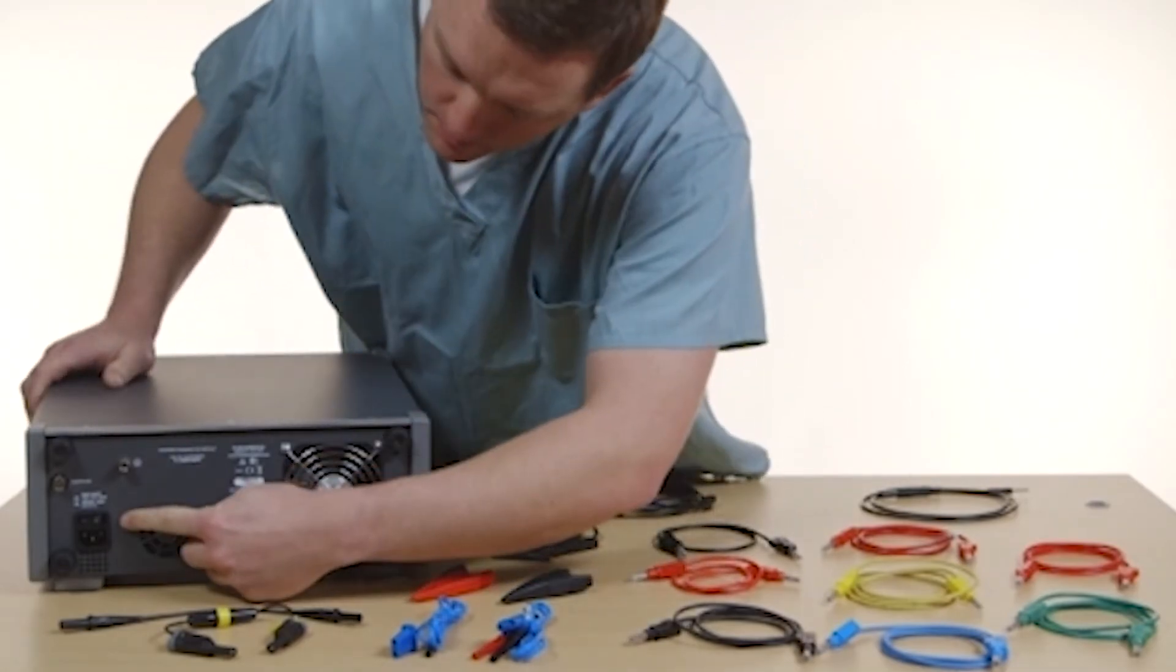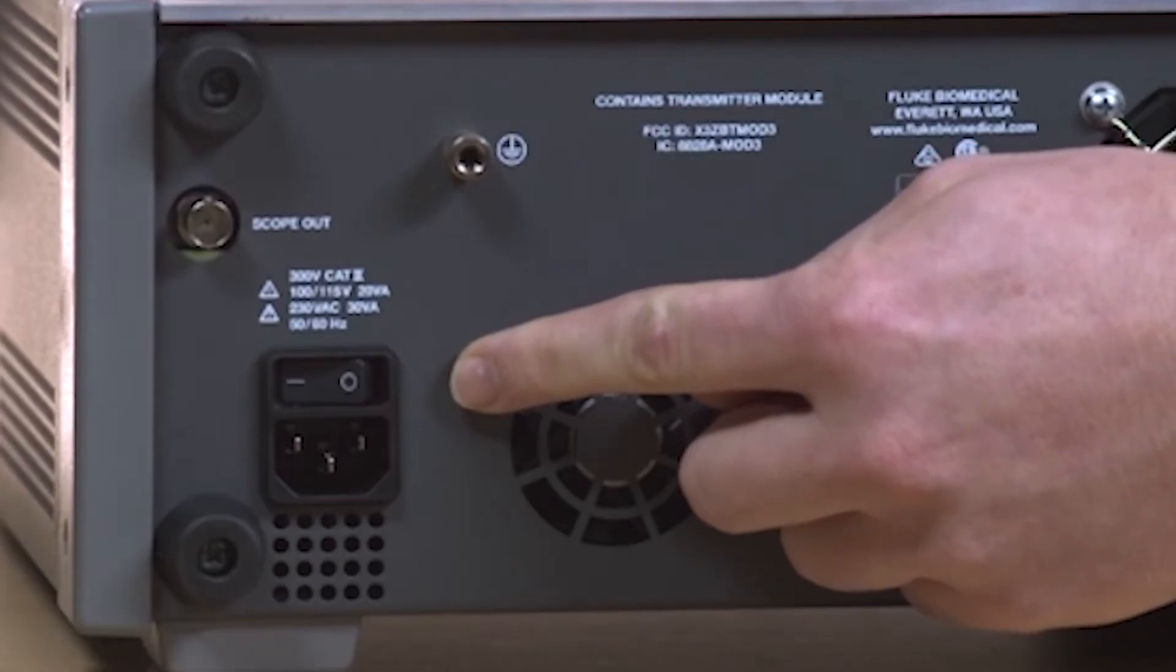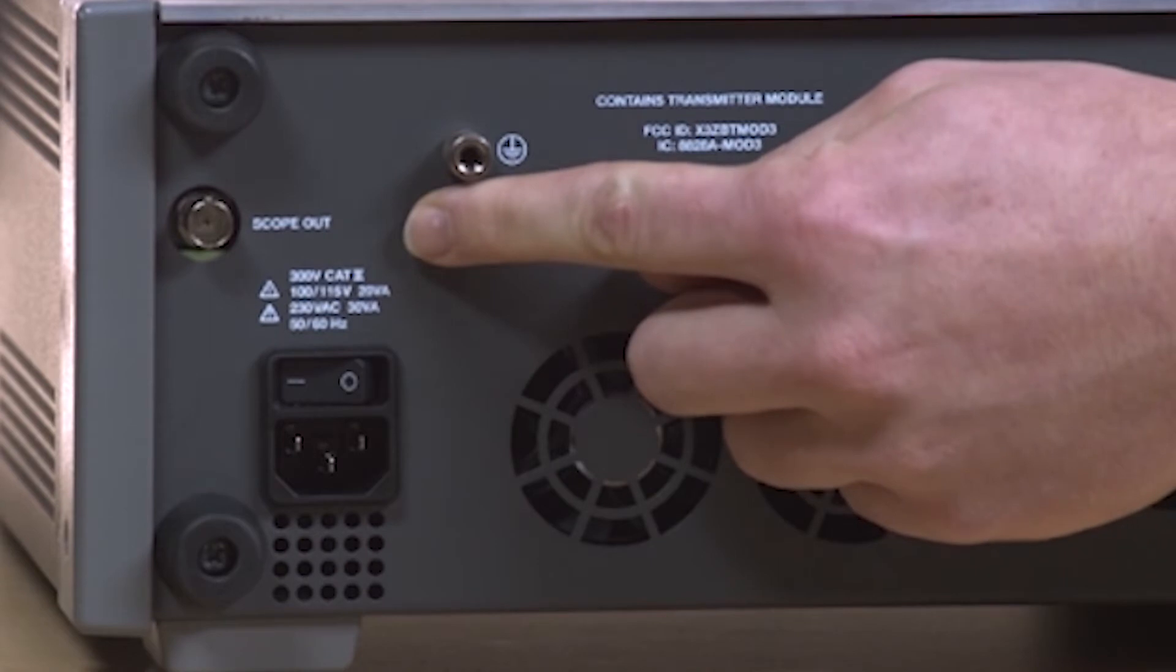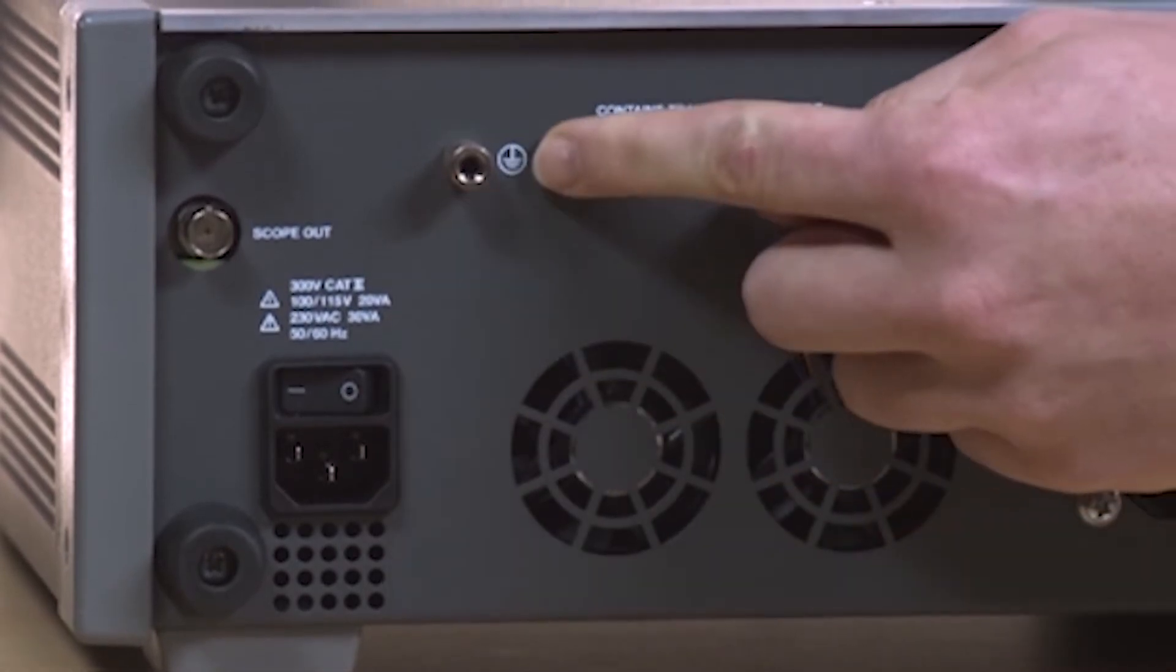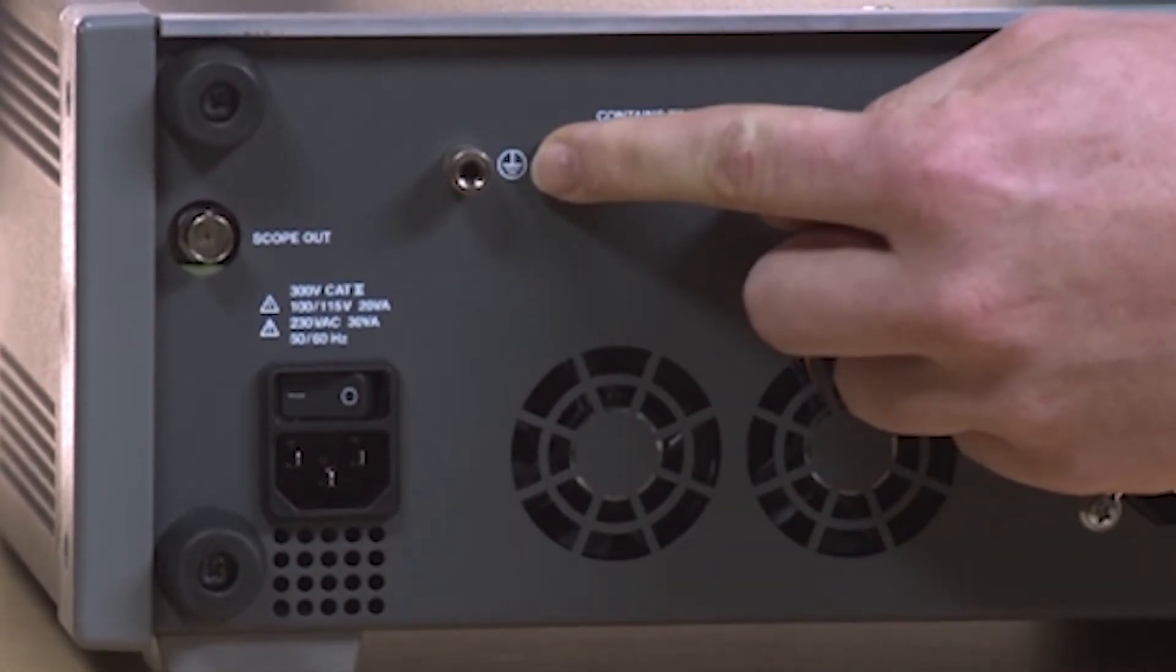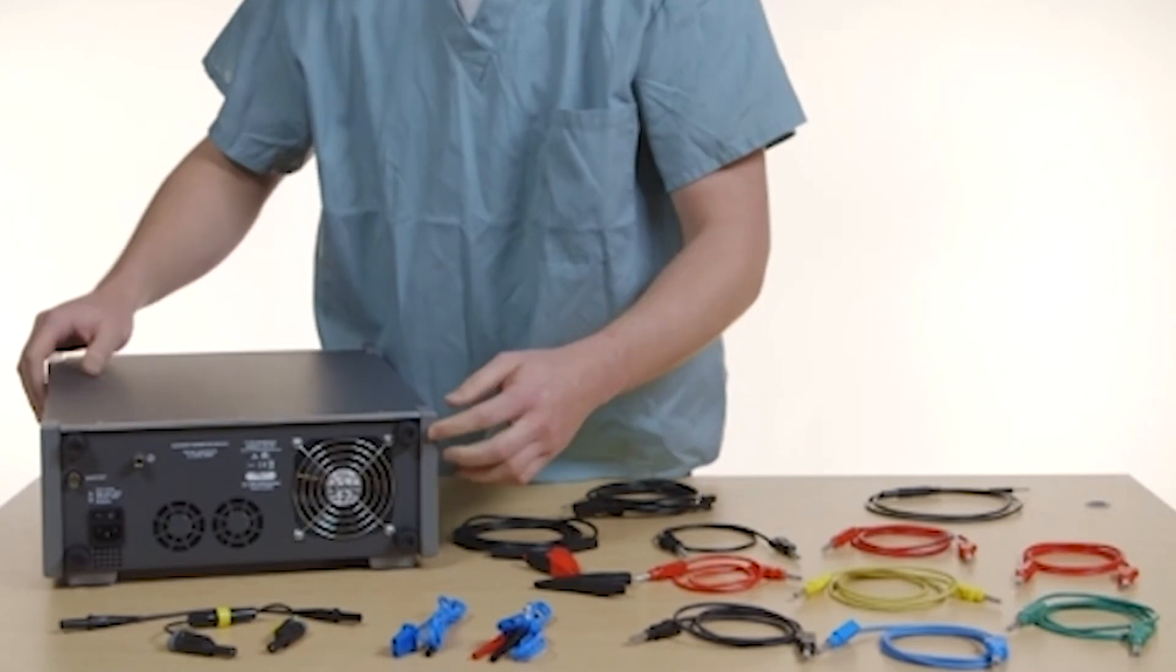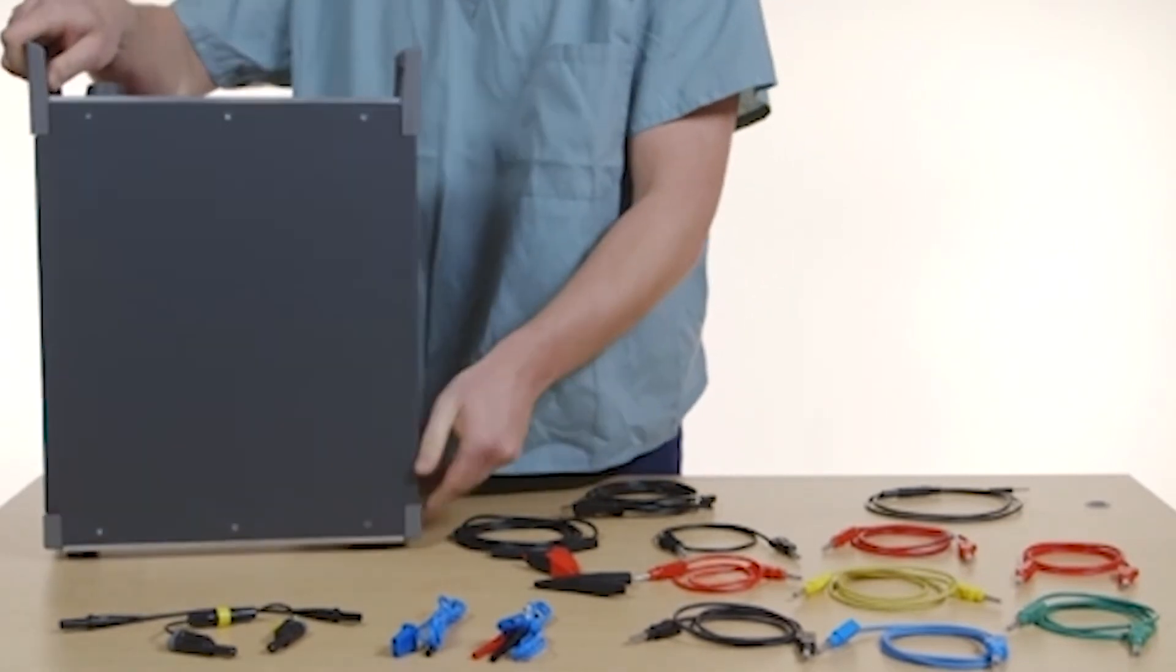The main power connection is at the back with an on-off switch. Here's the scope out for displaying the electrosurgical unit output power, which is the RF waveform on any oscilloscope. This is the ground lug. The bumpers protect the back of the unit if stood upright.